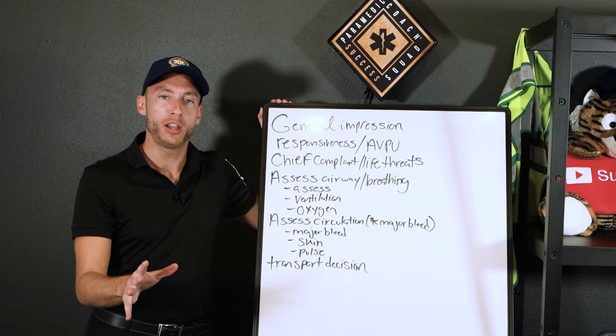Next is the field impression and treatment plan. What do you think is going on with the patient? What is your treatment plan going forward? What reassessments will you do? Then transport — we made a transport decision earlier. Are we sticking with it, upgrading, or downgrading? Most likely you'll continue as high priority. You may be re-evaluating transport, but you should continue to move forward.